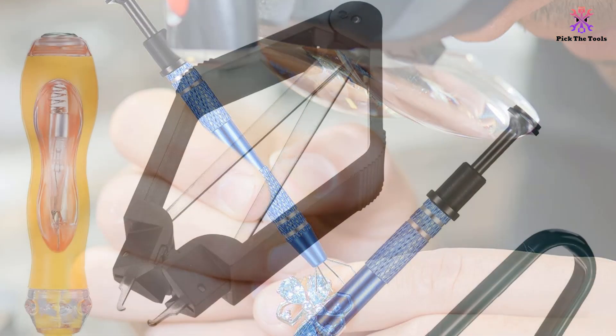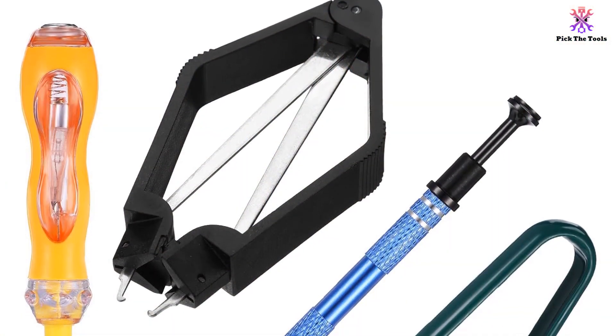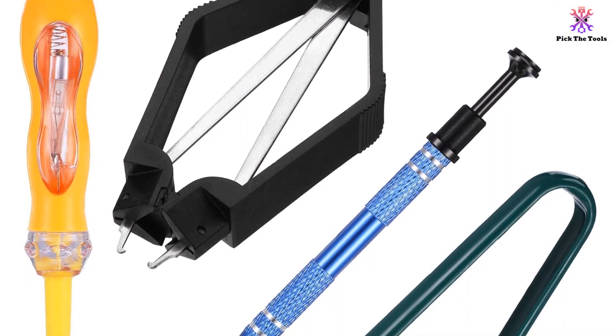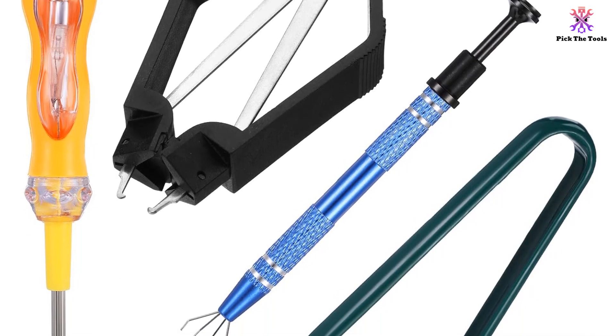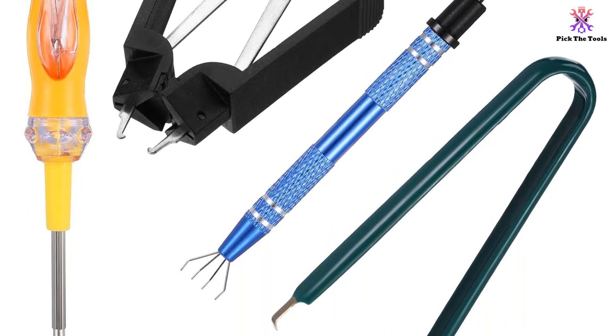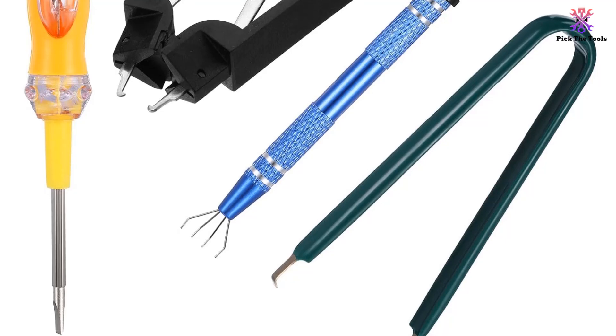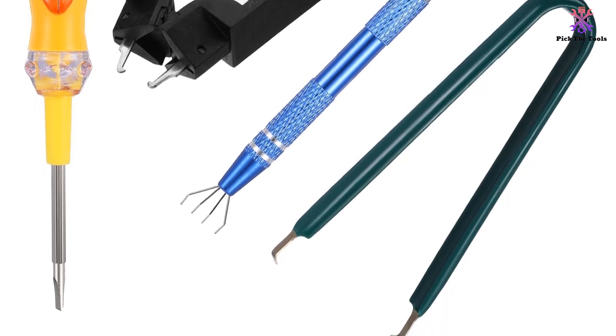The set includes a 4-claw picker, a U-shaped IC extractor, a PLCC IC chip puller, and a test pencil. Universal sized and suitable for the repair of mobile phones, TVs, and electronic parts.